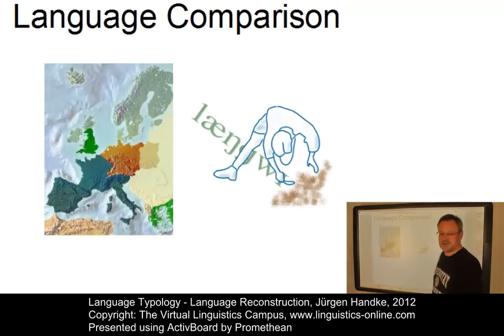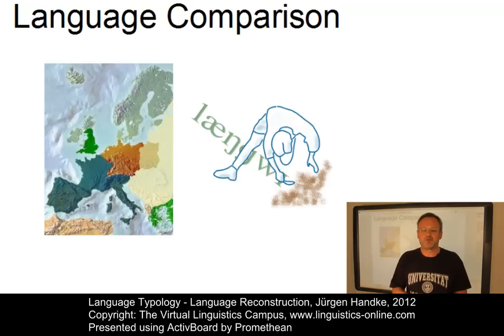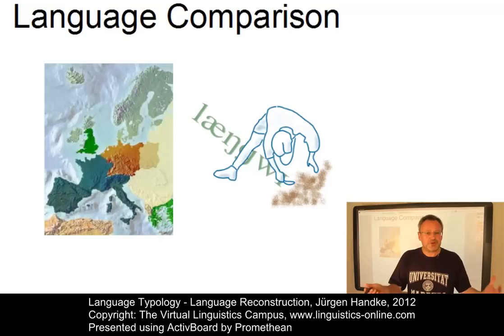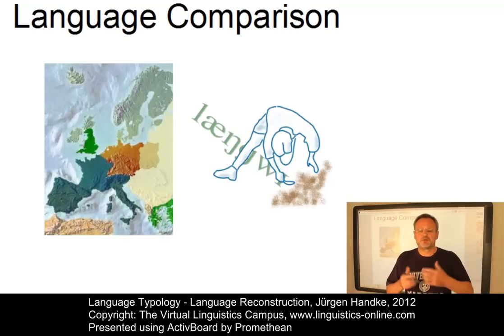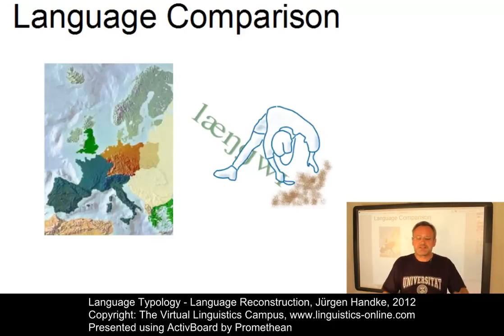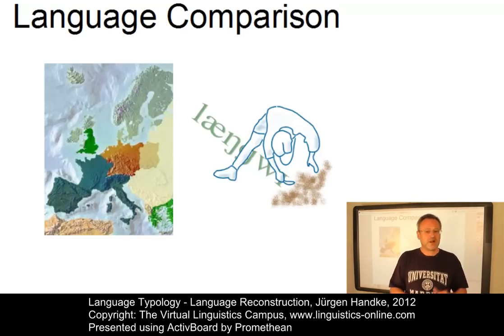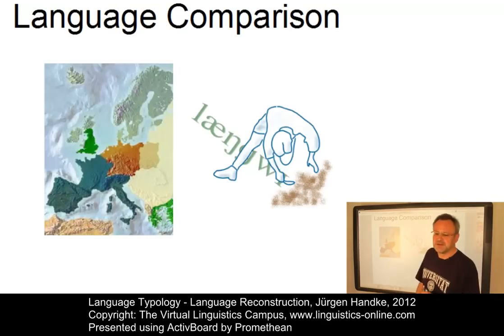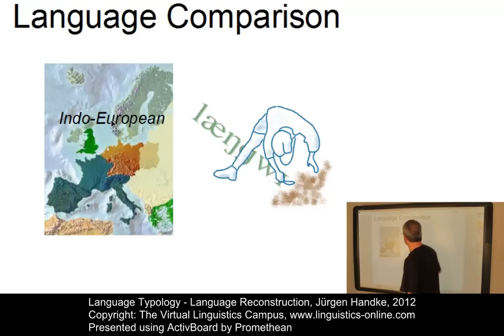In the 18th century, scholars began to compare groups of languages in a systematic way to see whether there were any correspondences between them. Evidence of a common origin for groups of languages was readily available in Europe, and by the beginning of the 19th century, the hypothesis emerged that there was once a language from which the many languages of Eurasia derived. This proto-language came to be called Indo-European, or to be absolutely precise, proto-Indo-European.